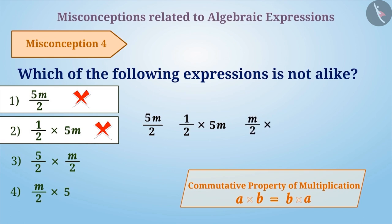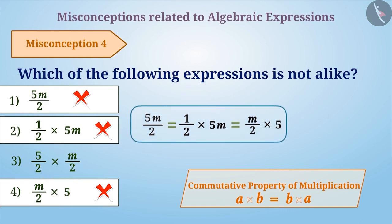Here, options 1, 2, and 4 are equal, but in 5 by 2 into m by 2, 2 has been divided twice, and so option 3 is not equal to these options. So the correct answer is 5 by 2 into m by 2.